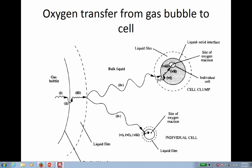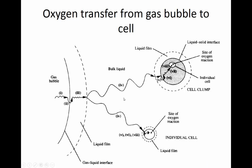Hello BNG 312 class. Welcome back to the final exam review lecture — just a few things to finish up here. We were about to get into oxygen transfer in solution from gas bubble to cell, and there are about eight different steps to gas oxygen transfer from a gas bubble filled with air or pure oxygen to get to an individual cell in a bioreactor.